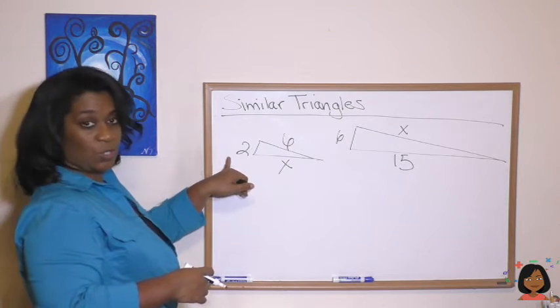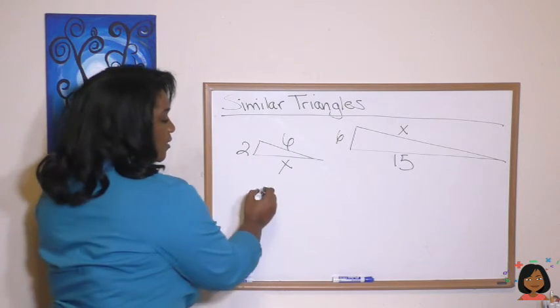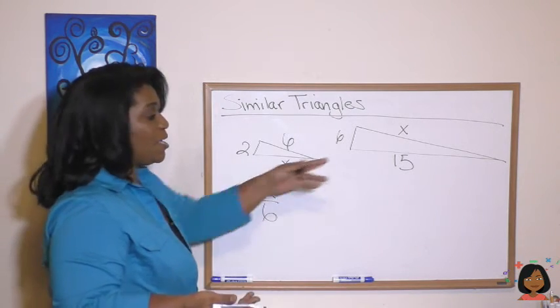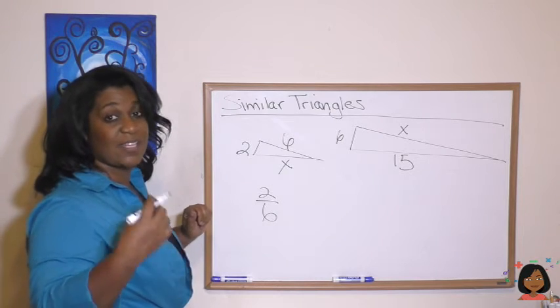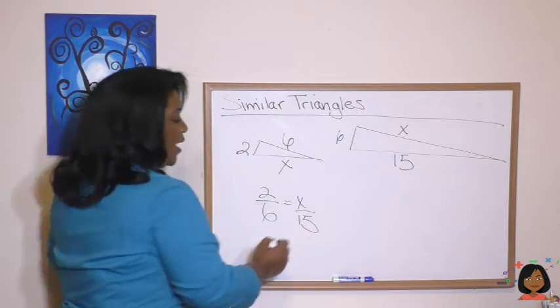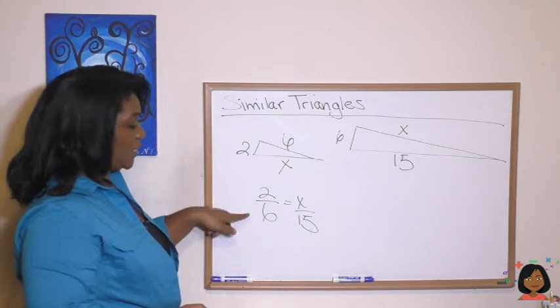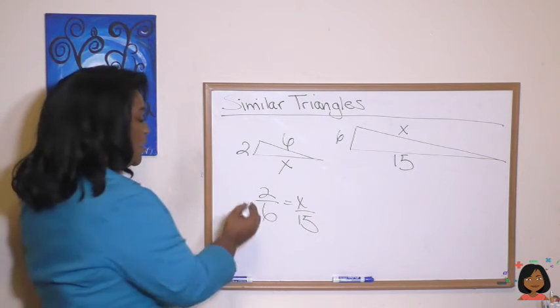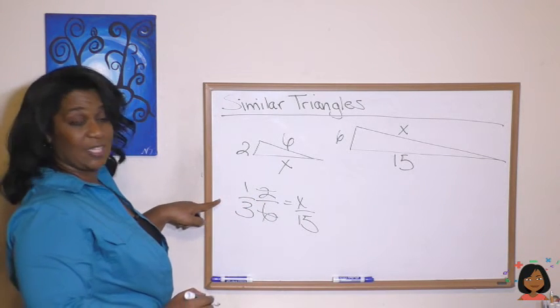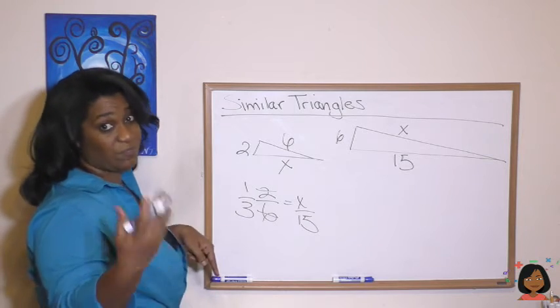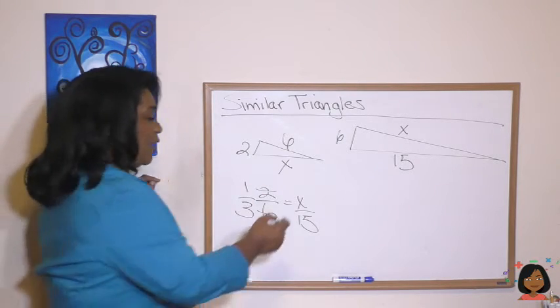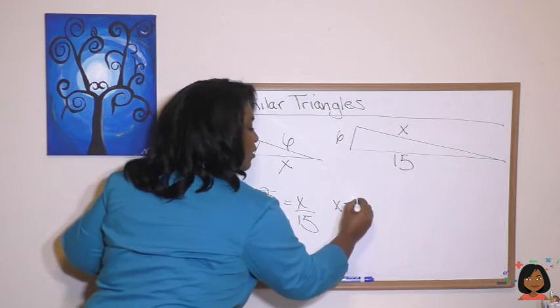So we know the 2 has a corresponding side with the 6. But here we have an x, we don't know what this side is. But we do know what its corresponding side is, 15. So we're going to put x over 15. And we can solve this proportion, right? The first thing I can do is I can simplify my 2/6 down to 1/3. And then I can look to see 3 times what is 15? 3 times 5 is 15. 1 times 5 will give us my numerator. So x equals 5.